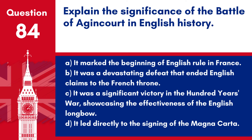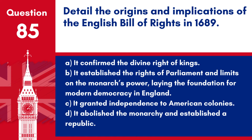Question 84. Explain the significance of the Battle of Agincourt in English history. a. It marked the beginning of English rule in France. b. It was a devastating defeat that ended English claims to the French throne. c. It was a significant victory in the Hundred Years' War, showcasing the effectiveness of the English longbow. d. It led directly to the signing of the Magna Carta. Answer: c. The Battle of Agincourt in 1415 is celebrated in English history for the remarkable victory achieved by Henry V's outnumbered forces, largely attributed to the effectiveness of the English longbow.